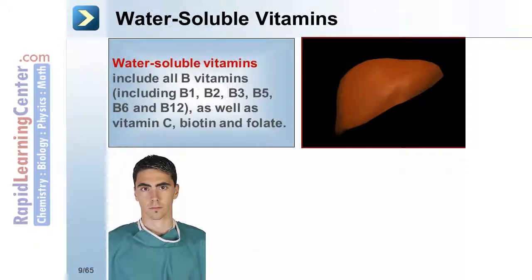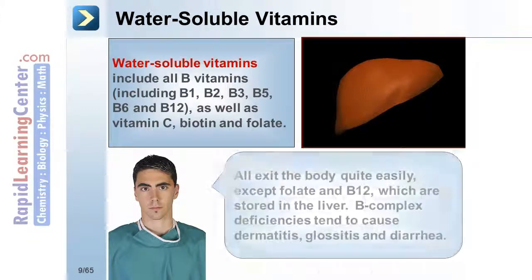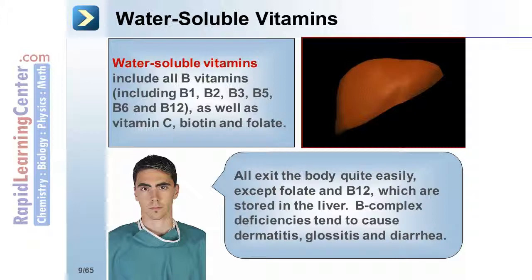Water-soluble vitamins include all B vitamins — B1, 2, 3, 5, 6, and 12 — as well as vitamin C, biotin, and folate. All exit the body quite easily, except folate and B12, which are stored in the liver. B-complex deficiencies tend to cause dermatitis, glossitis, and diarrhea. We will now take a closer look at each vitamin, beginning with the fat-soluble vitamins.